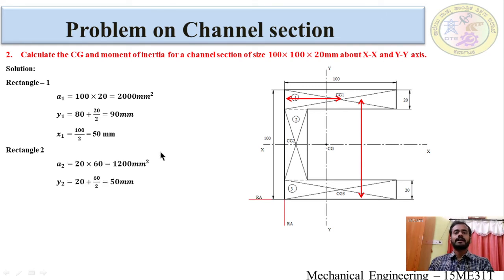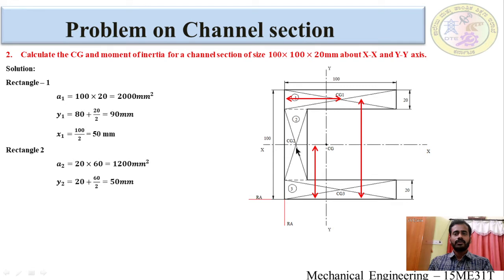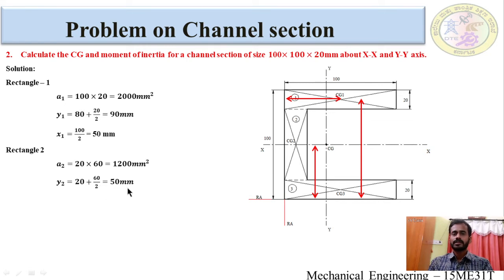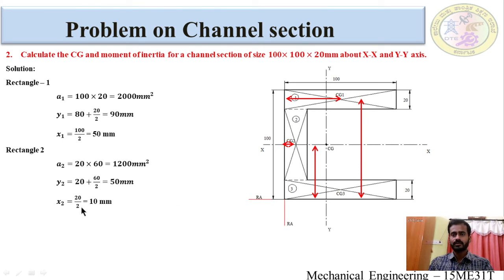For rectangle 2, area A2 = 20 × 60 = 1200 mm². Distance y2 from reference axis to centroid of rectangle 2: y2 = 20 + 60 ÷ 2 = 50 mm. Distance x2 from reference axis to centroid of rectangle 2: x2 = 20 ÷ 2 = 10 mm.